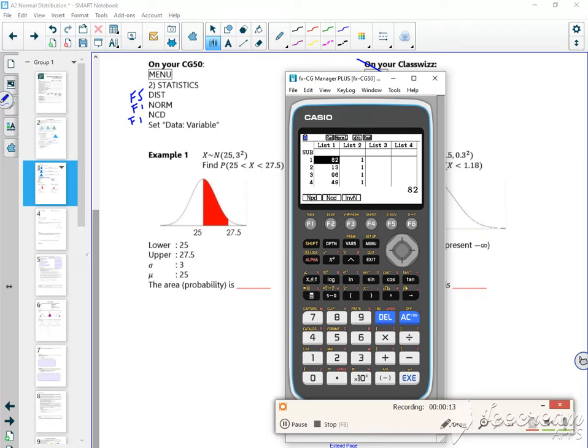I'm looking at between 25 and 27.5. My upper is 25, my lower is 27 and a half. So it's a normal CD. Make sure it's on variable. So my lower is 25, my upper is 27 and a half.